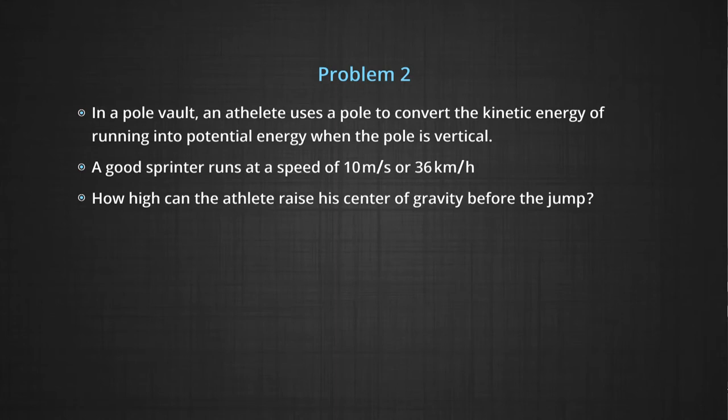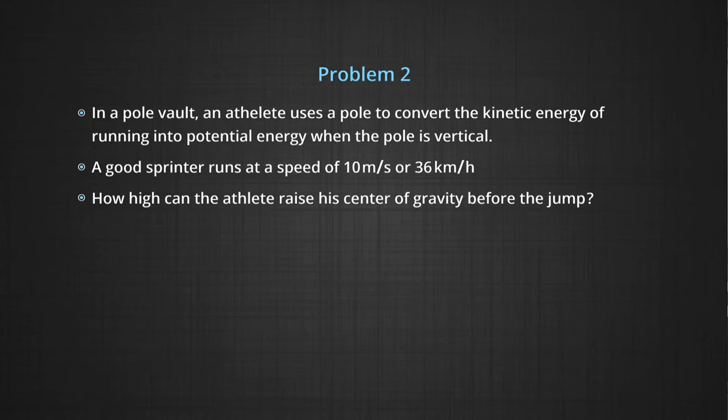Another example: pole vault. An athlete runs with a long pole, then stops short of a tall bracket, and the kinetic energy lifts him to a height above the bar, after which he jumps over it. The athlete practices so that he gains more and more potential energy to go higher. In a pole vault, the athlete converts the kinetic energy of running into potential energy when the pole is vertical. A good sprinter runs at about 10 meters per second, which is about 36 kilometers per hour. How high can the athlete raise his center of gravity before the jump?